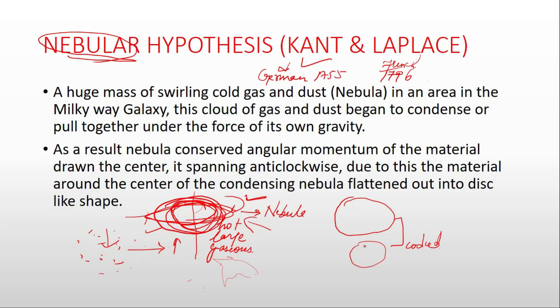As it contracted inwards, in order to conserve angular momentum, the nebula started rotating at very high speed. Due to this increased speed, the centrifugal force in the equatorial zone also increased, causing the nebula to bulge out in the equatorial zone in a ring-like shape. This centrifugal force around the equatorial region increased, creating a bulge.